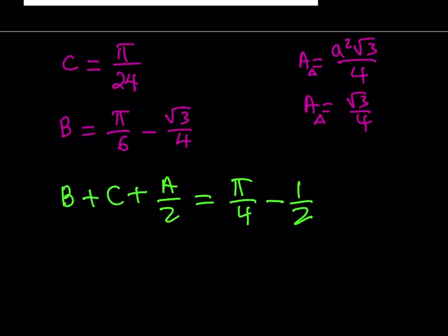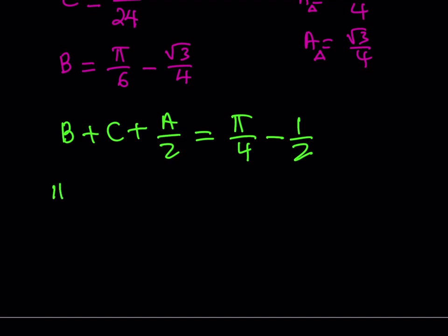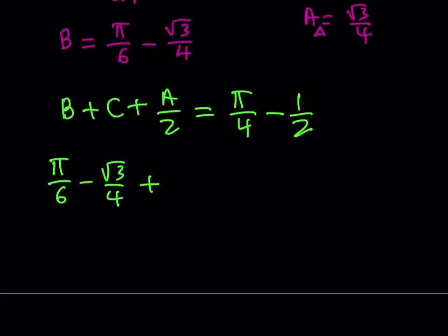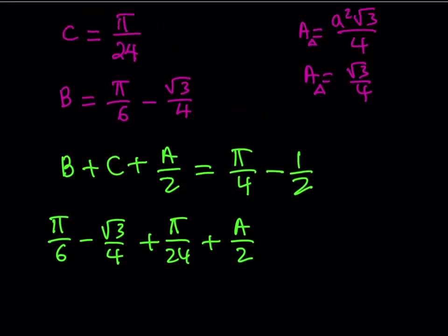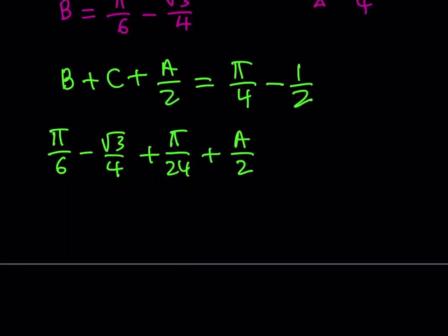How do we put it all together? Our goal is to find A, and we do know of B and C, so we can just go out and substitute. Let's substitute everything here. Don't worry about simplifying or making a common denominator, because I'm going to simplify it all at once. So, it's going to be pi over 6 minus root 3 over 4, that's B, plus C, which is pi over 24, plus A over 2. Don't forget, this is half of A only, not A, because we didn't use the whole thing. So this should equal pi over 4 minus 1 half.